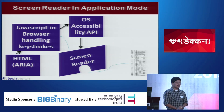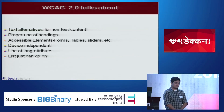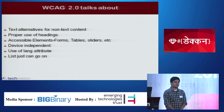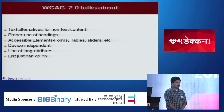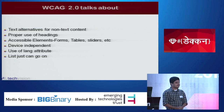Now we know how a screen reader works and how blind and low vision users use a computer with a screen reader and keyboard. Let us look into the different web accessibility standards that have evolved over the years to make web content accessible. There are many standards available for different countries, and there are also different regulations for web accessibility. I will discuss the two main standards. One is the Web Content Accessibility Guidelines, WCAG, which defines different standards to make basic web content accessible.